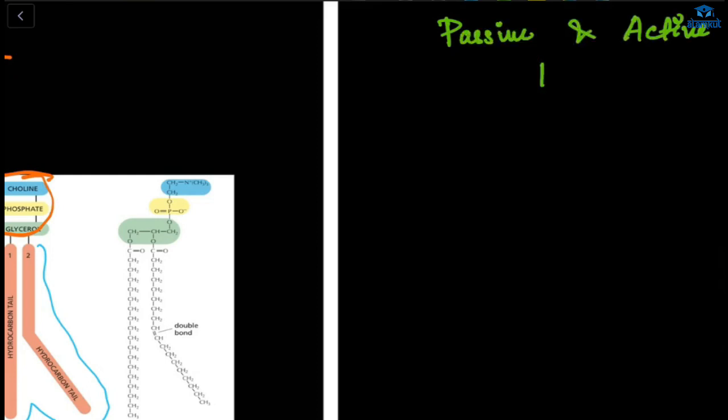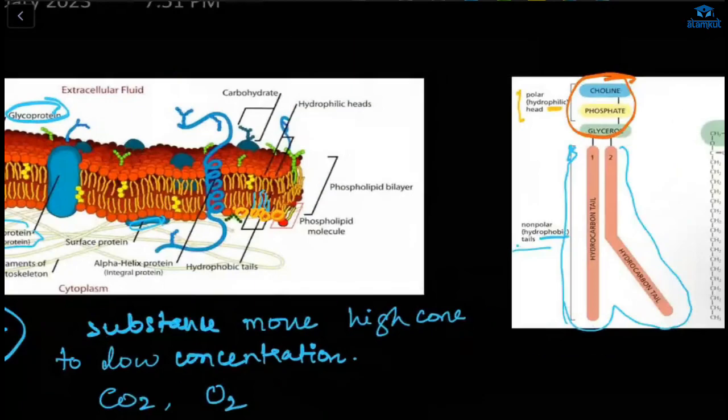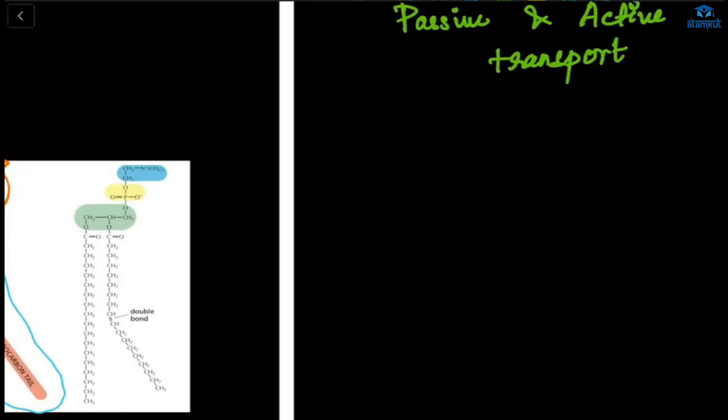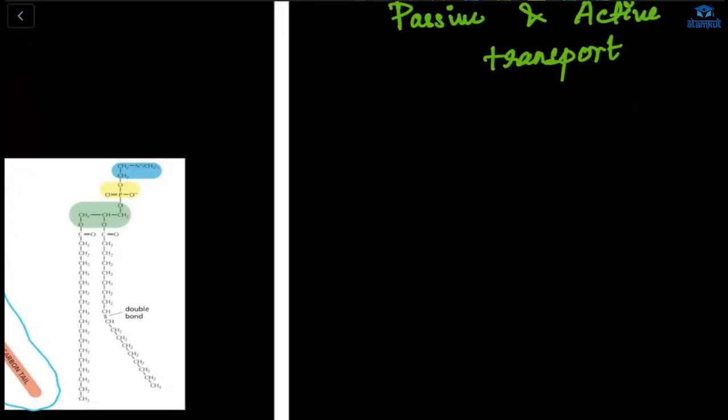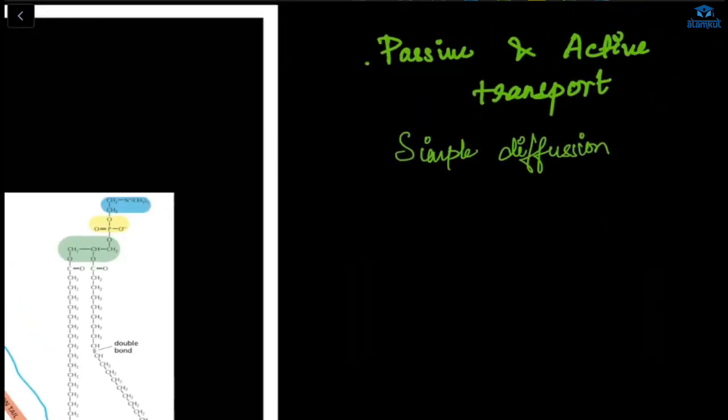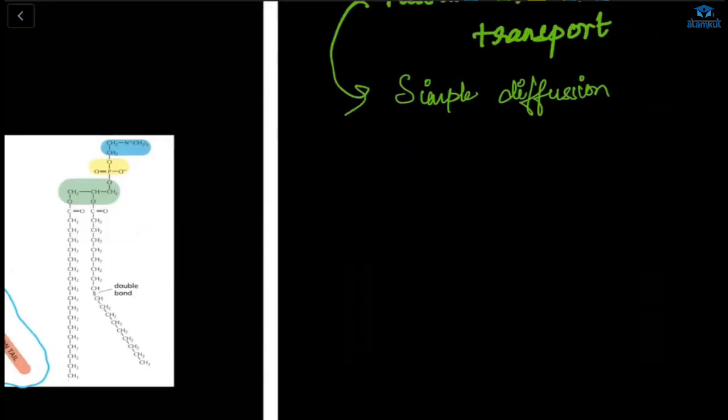Passive and active transport. We have talked about diffusion. That is simple diffusion, and that is passive. We have talked about simple diffusion. Two types of passive transport are there: simple diffusion and facilitated diffusion.